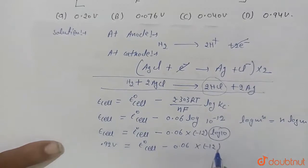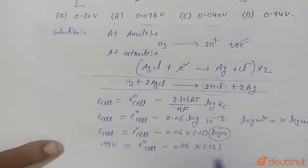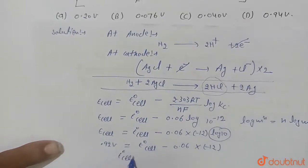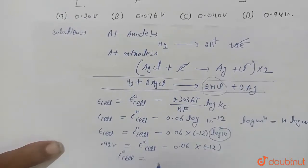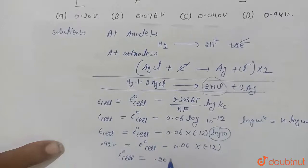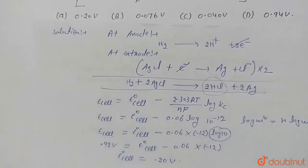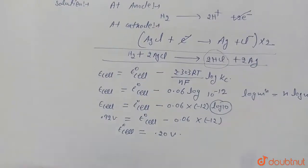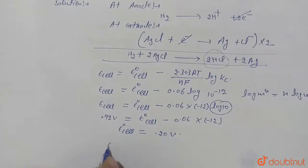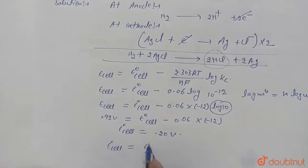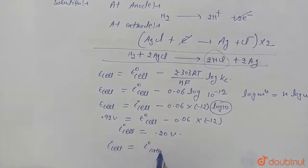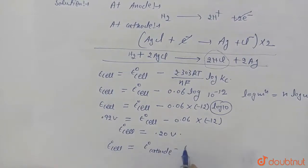Now we know that the value of E cell and value of E naught cell will be E cathode, E naught cathode minus E naught anode. And value of E naught cell will come out, here on left side at anode hydrogen cell will be used, hydrogen electrode cell.